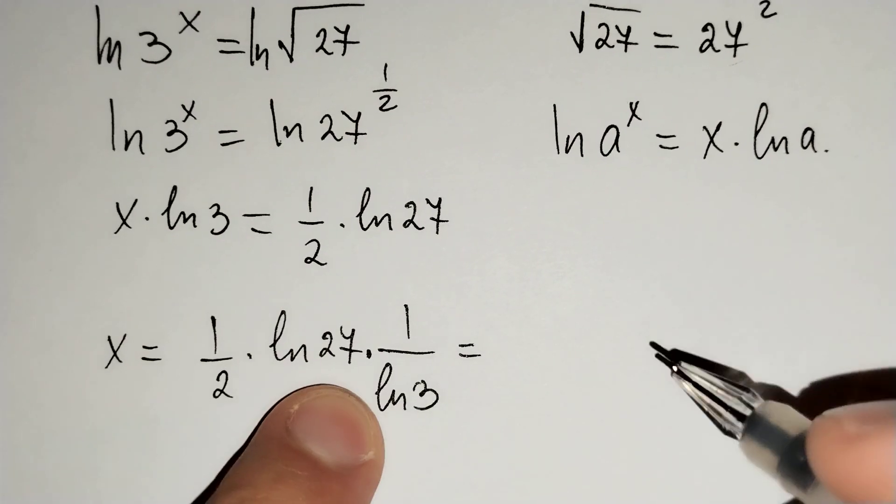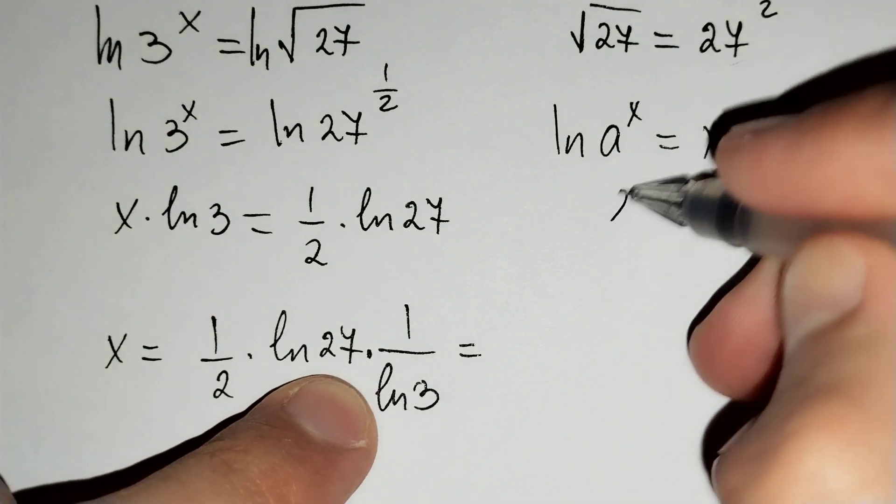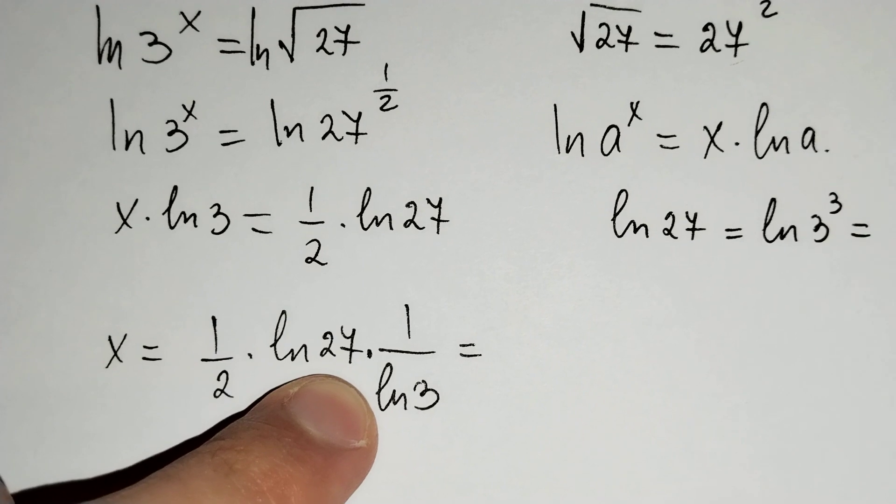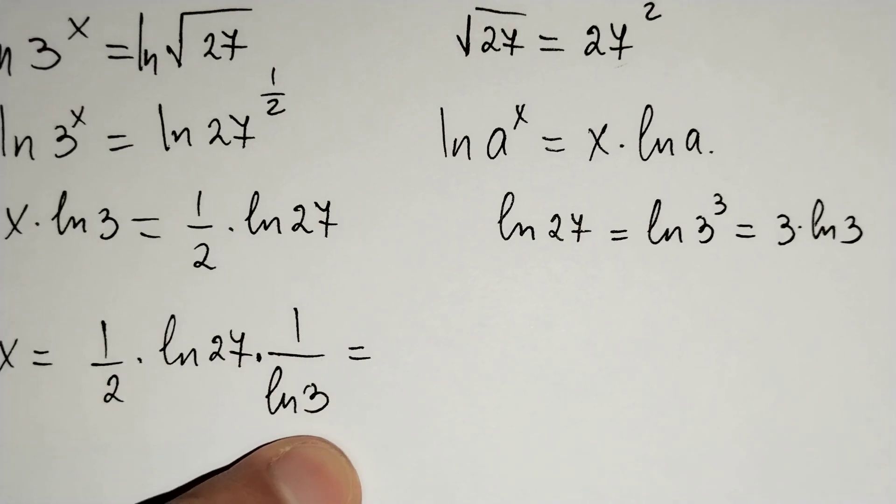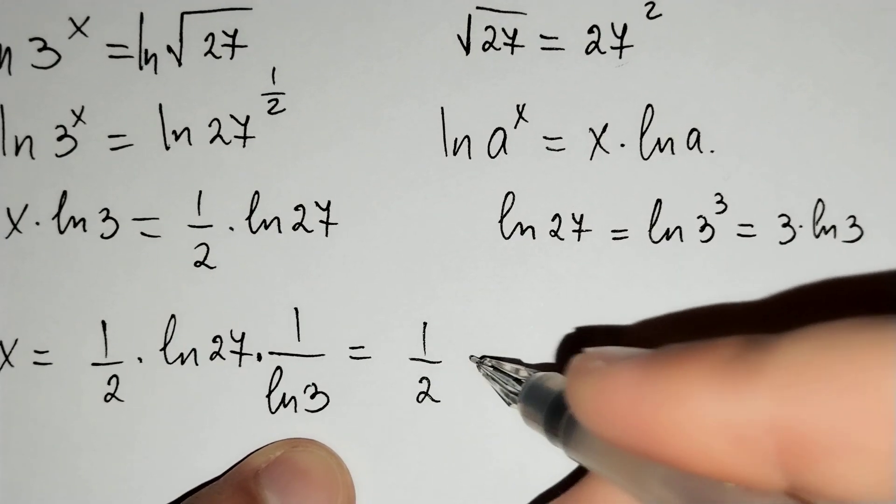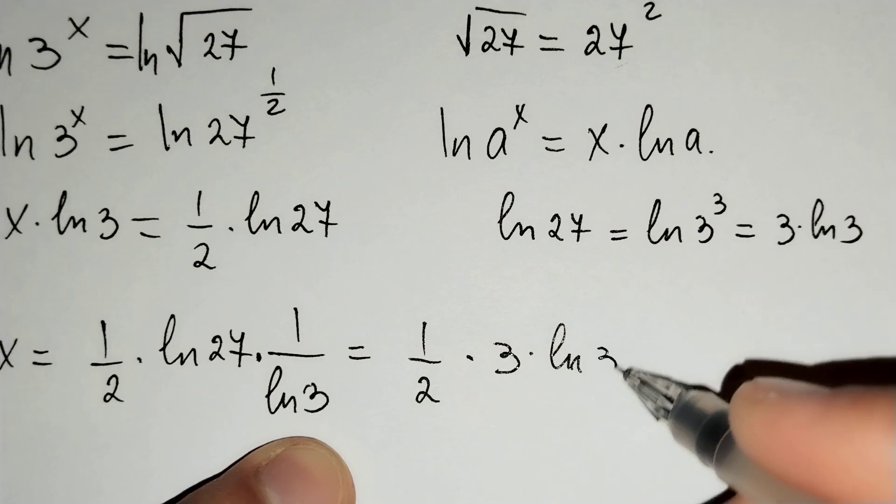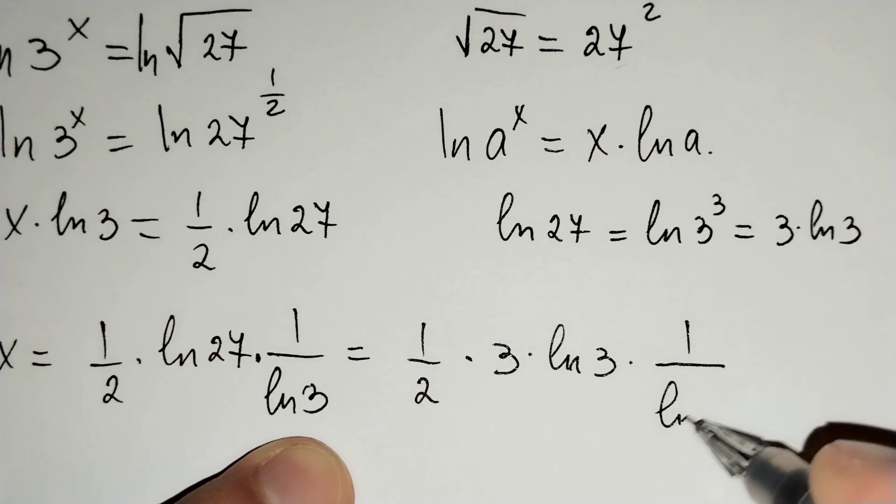Now ln(27) equals ln(3^3), which equals 3 times ln(3). Substituting this in, we get (1/2 times 3 times ln(3)) divided by ln(3).